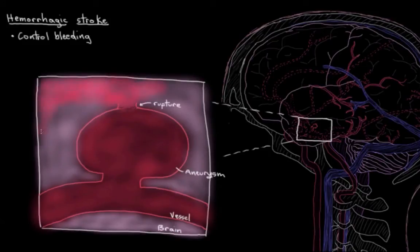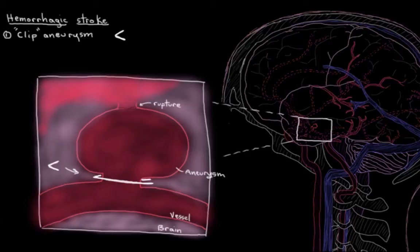There's one called aneurysm clipping. If an aneurysm in the brain ruptures, it starts to spill blood into the brain space. One way to fix that is for the surgeon to place a metal clip that gets clamped onto the base of the aneurysm. Now the clip has blocked blood from coming through and spilling out. Blood can just continue along its way. That's one way to treat a hemorrhagic stroke.